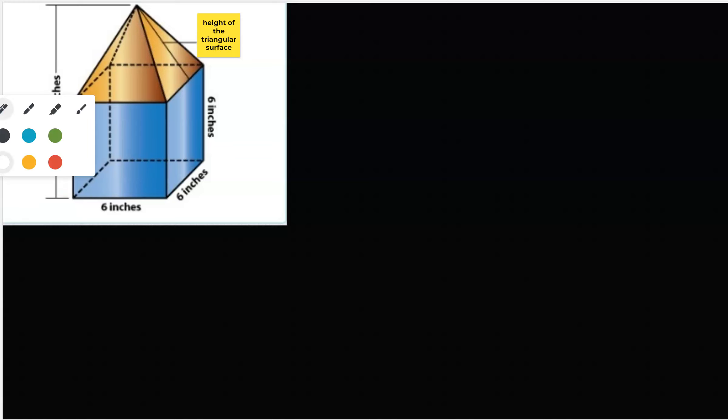Hey class, this is an example of a composite shape and we are going to find the volume as well as the surface area of this shape. This shape consists of a rectangular prism and a pyramid on top. Let's go and find the volume first.